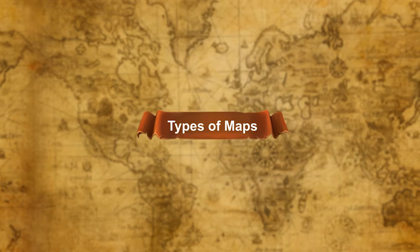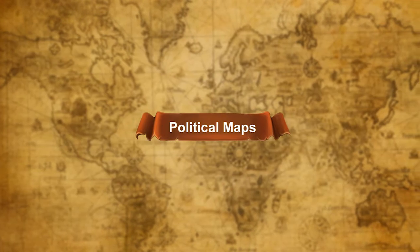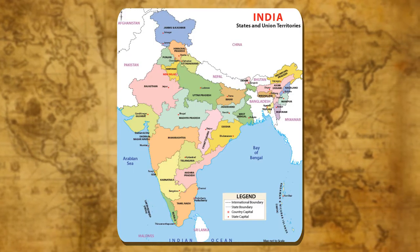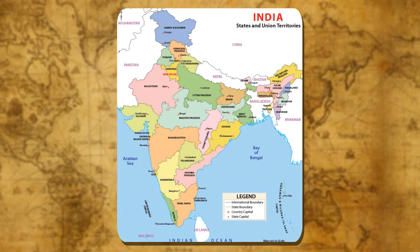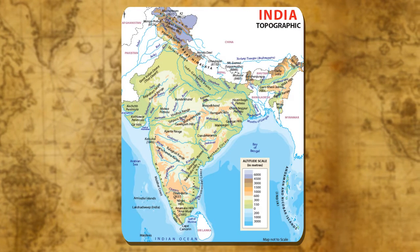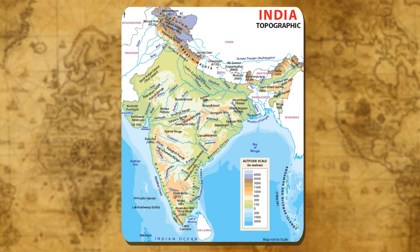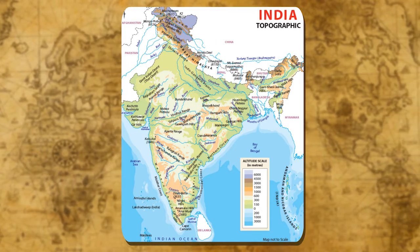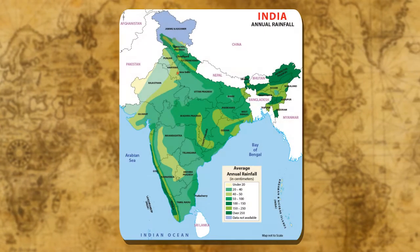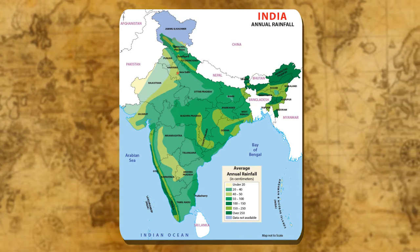Types of maps. There are mainly three types of maps. Political maps: the maps clearly showing the boundaries and areas of different countries and states are called political maps. Physical maps: some maps show the physical features such as the continents and oceans, the mountains, plains and plateaus, etc. They are called physical maps.